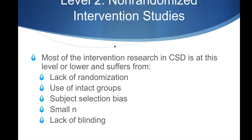Level two: non-randomized intervention studies. Most of our research, at least until recently, is at this level or lower and suffers from lack of randomization and use of intact groups. Groups that were already there. So let's say I'm doing therapy with 10 people at my clinic and someone else is doing a different kind of therapy at their clinic with 10 people. We'll compare my participants getting my therapy versus their participants getting their therapy. But those are intact groups — not randomized — so it's a level two.